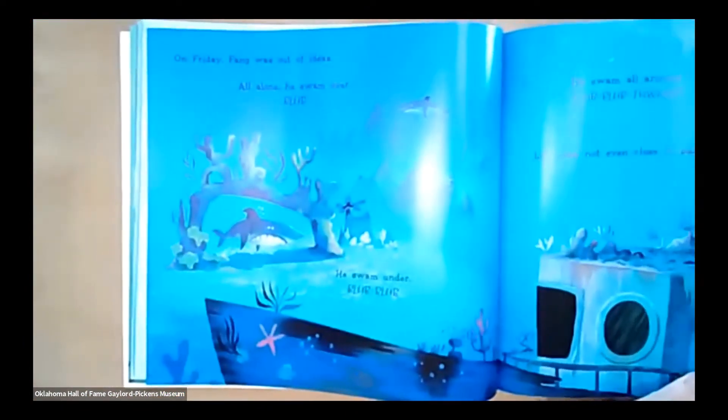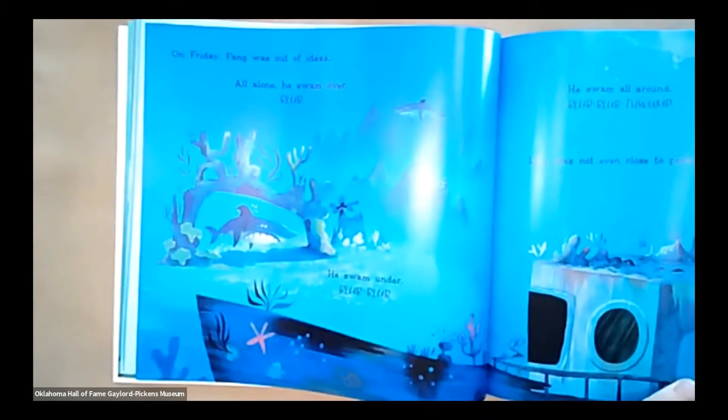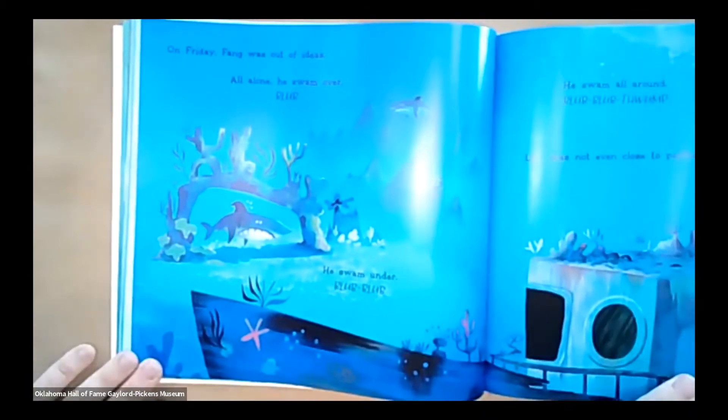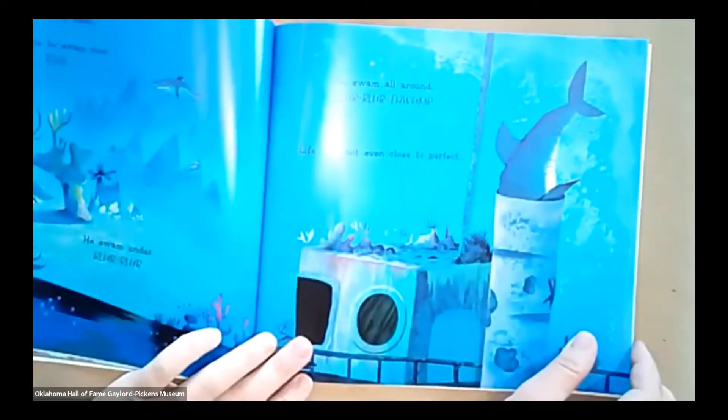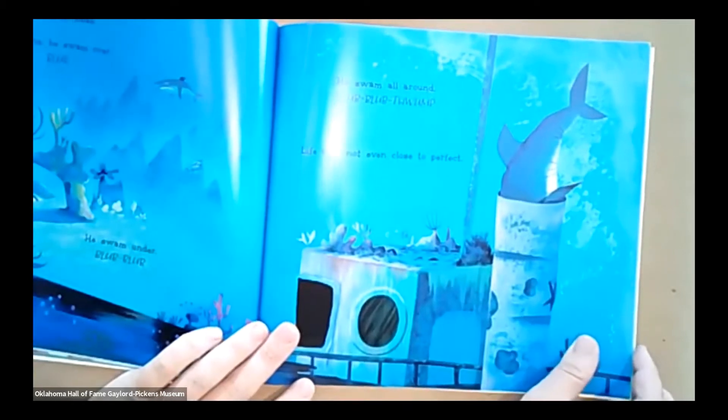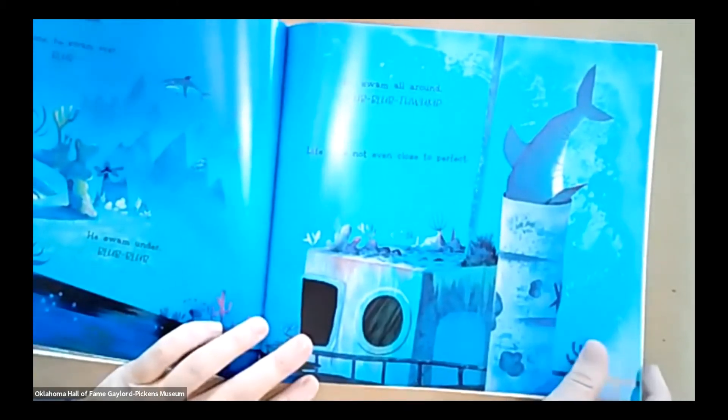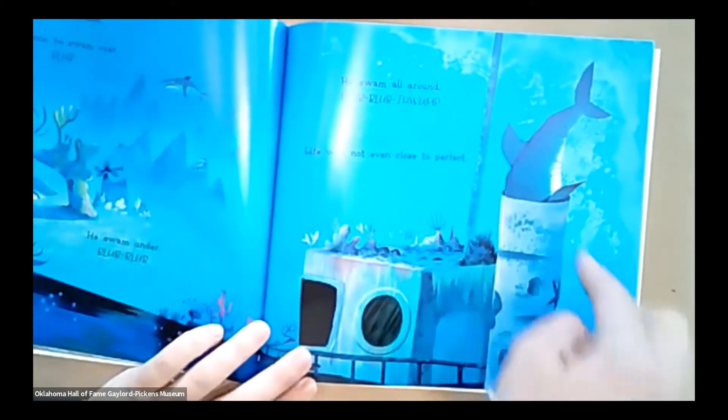On Friday, Fang was out of ideas. All alone, he swam over, blub. He swam under, blub, blub. He swam all around, blub, blub, thwump. Life was not even close to perfect. There he is, he's trying to hide. What was that thwump, though?